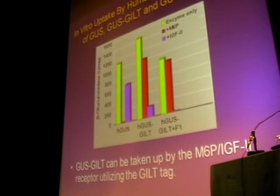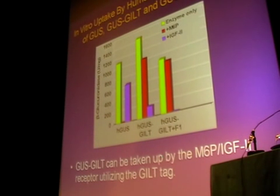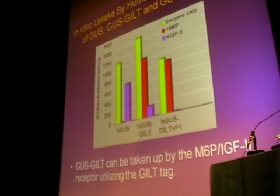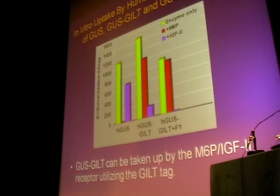We first looked at these enzymes in an in vitro uptake by human MPS7 fibroblasts. You can see that H-GUS is taken up very well by these cells, and the uptake is completely inhibited by mannose-6-phosphate. However, there's only a partial inhibition by IGF-2, which is mainly by steric inhibition, not direct competition with the mannose-6-phosphate enzyme.